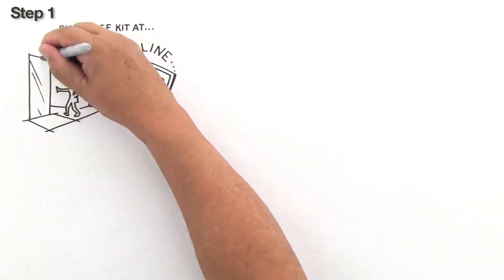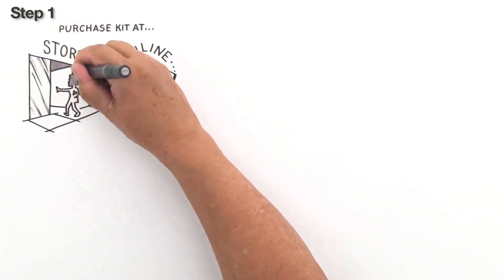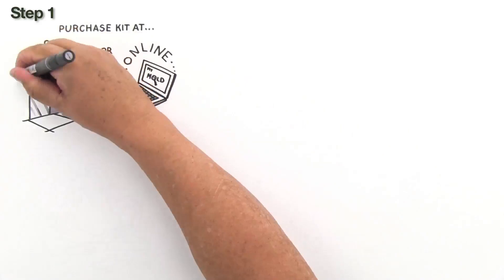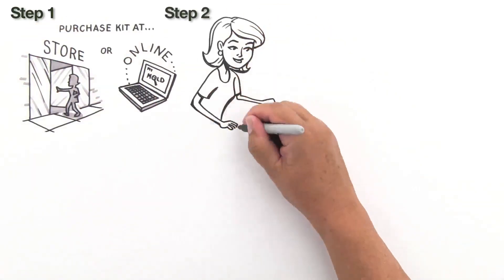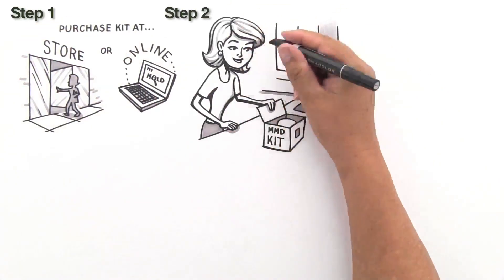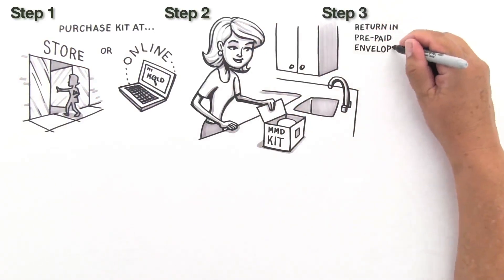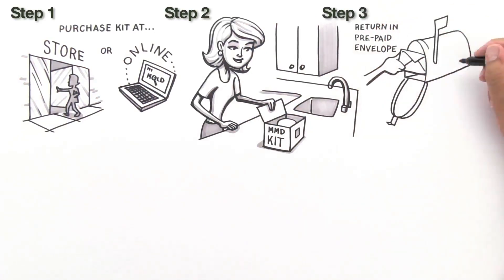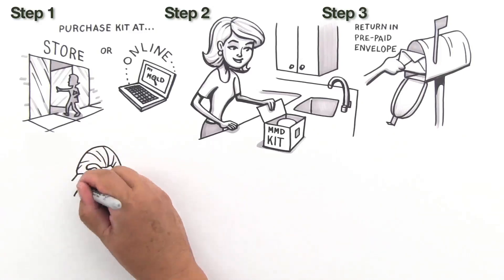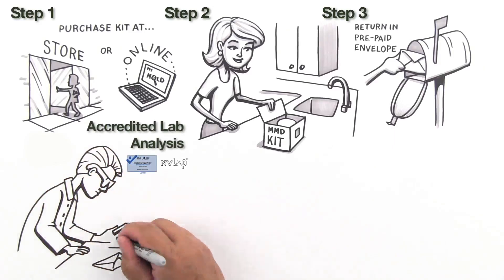Here is what you do. One, purchase the MMD system online or at your closest retail store. Two, read the instructions and begin testing right away. Three, send the results in a prepaid envelope to MMD's accredited lab. That is it. You will receive your lab results by email in just a couple days.